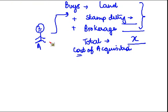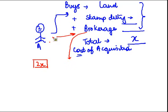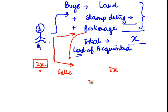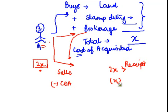Three years down the line, this gentleman realizes the value of the land is now 2X. He goes back to the broker and asks him to arrange a buyer. The broker finds a buyer and the land is sold for 2X. Now this 2X is the receipt — but what is the actual profit? The profit is 2X minus the cost of acquisition.